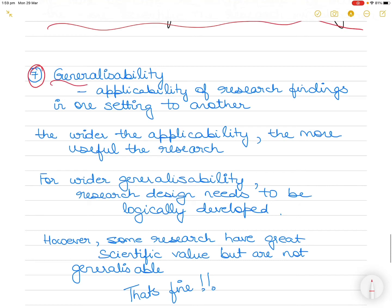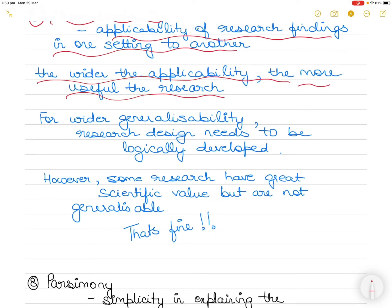The seventh characteristic of research is generalizability, which refers to the applicability of research findings in one setting to other settings. Obviously the wider the applicability of the solutions generated by your research, the more useful your research will be considered to the users or to the research community.